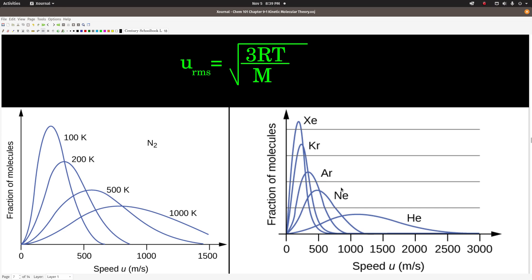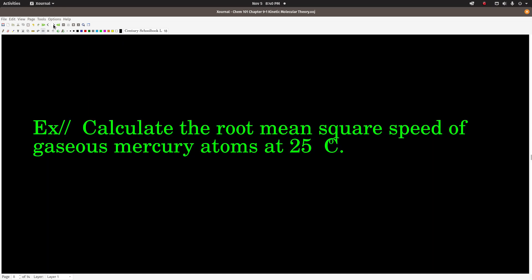This graph over here is shown at the same temperature but different gases. These are all noble gases. Xenon's the heaviest, helium's the lightest, and the same sort of behavior. The lighter the gas, the greater the root mean square speed, and also the graph broadens out. The distribution broadens out because the average speed is faster. So heavier, slower, lighter, faster at the same temperature.